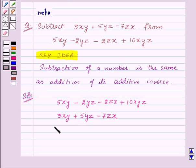Now, we need to subtract 3xy plus 5yz minus 7zx from this expression, or we can say that we need to add the additive inverse of this expression, that is 3xy plus 5yz minus 7zx, to the first expression.